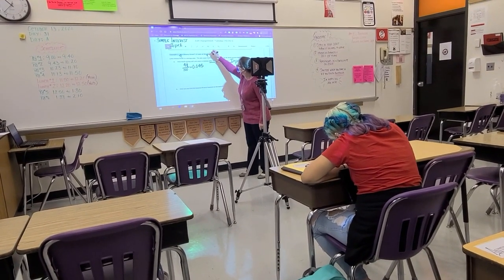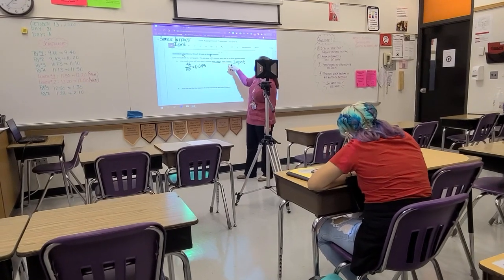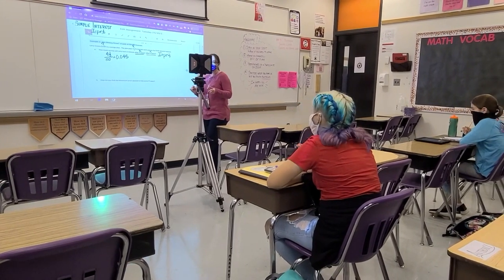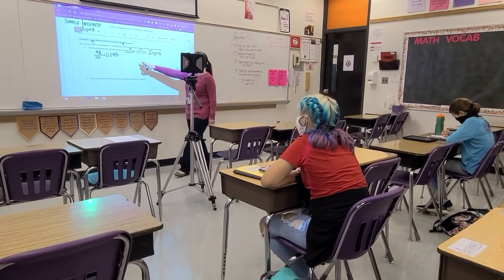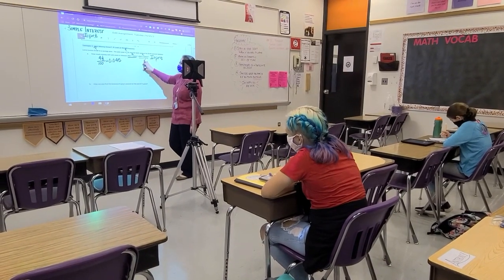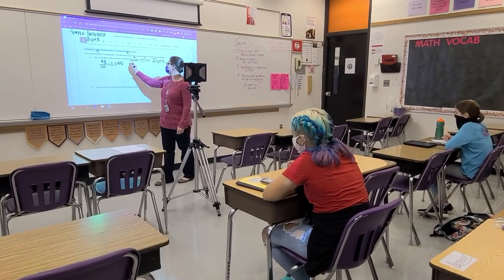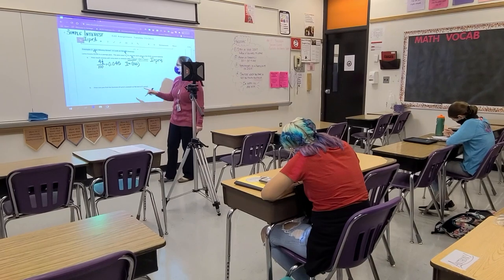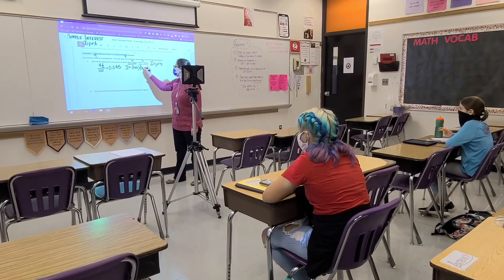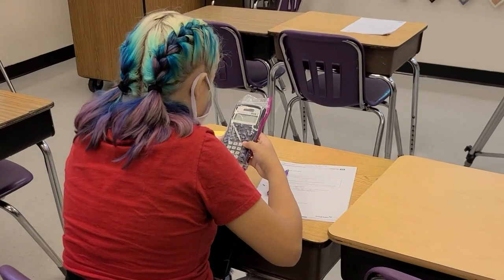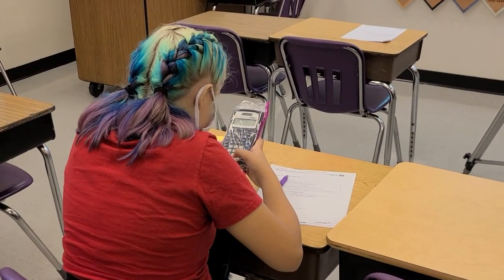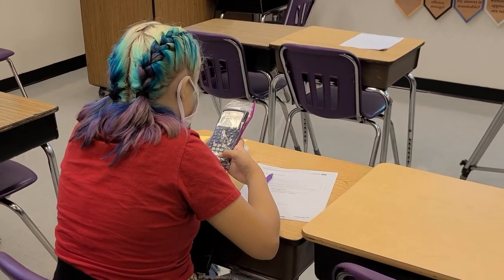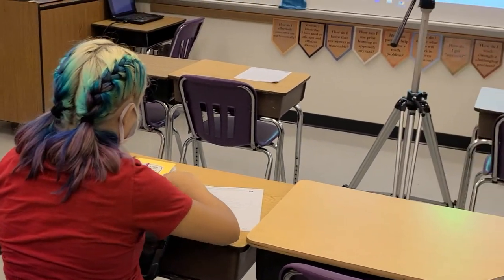The four and a half percent is our rate, and the years here is our time — they represent the T. So we have to do two equations for this, because it wants to know after three years and after five years how much interest you will have earned. So if we do our first one, we have I equals the principal times the rate. Tell me in the chat box what you get.